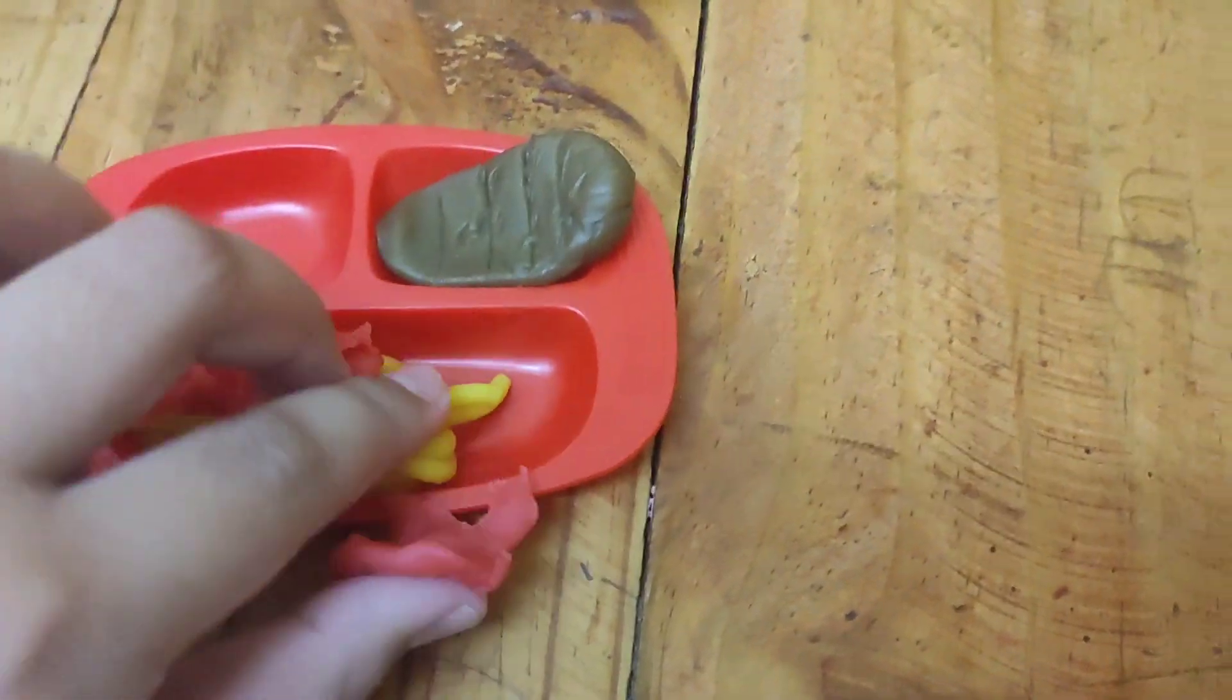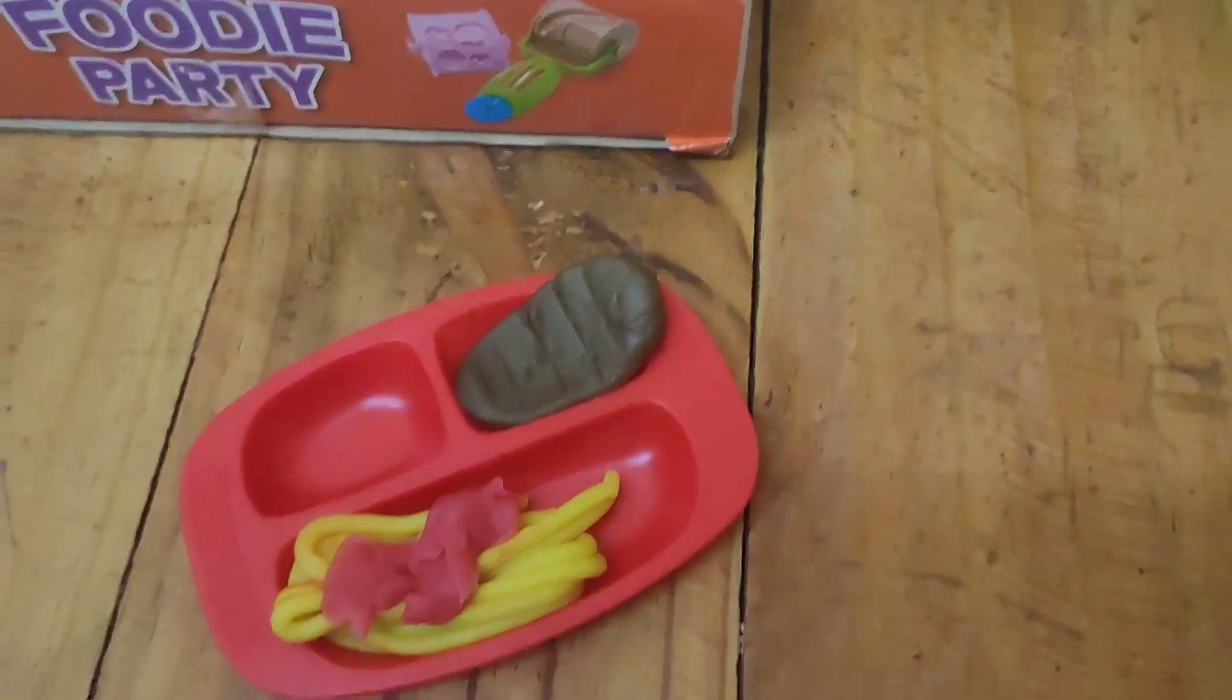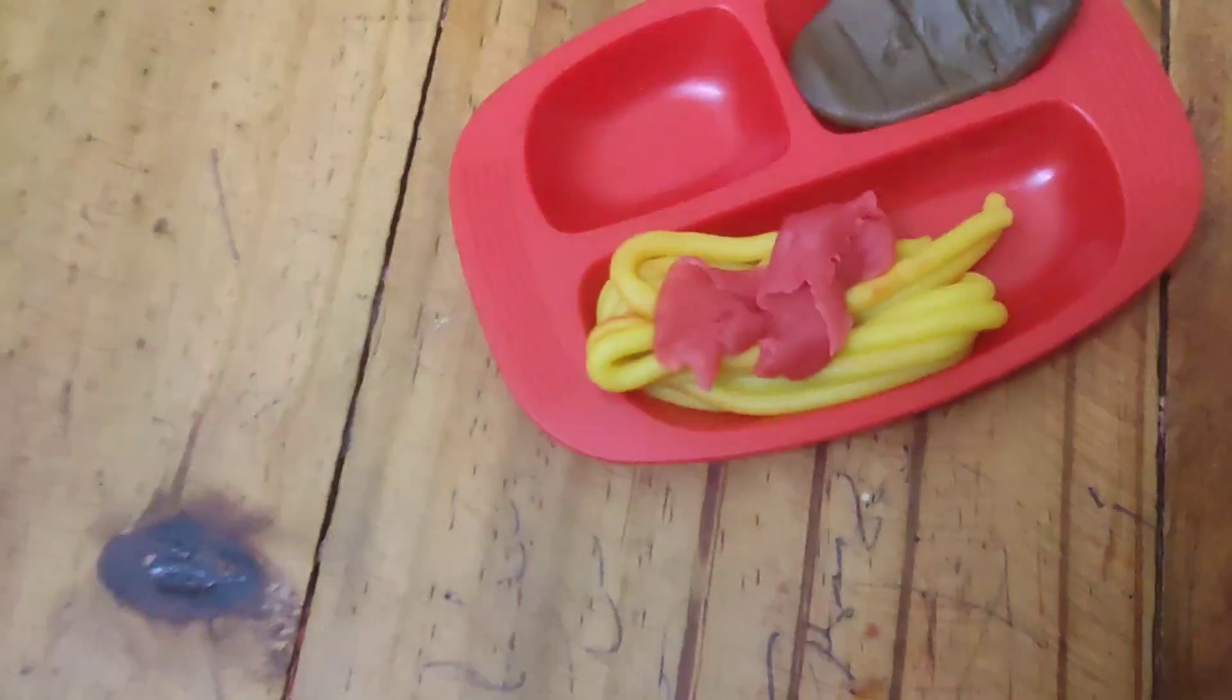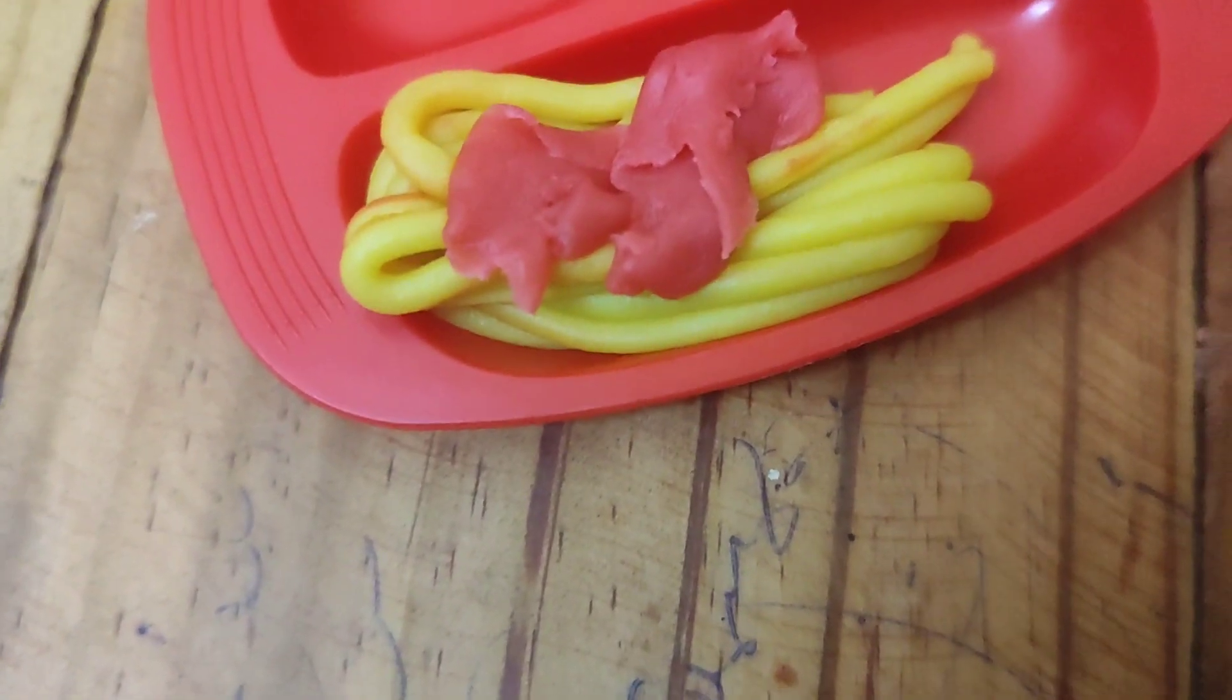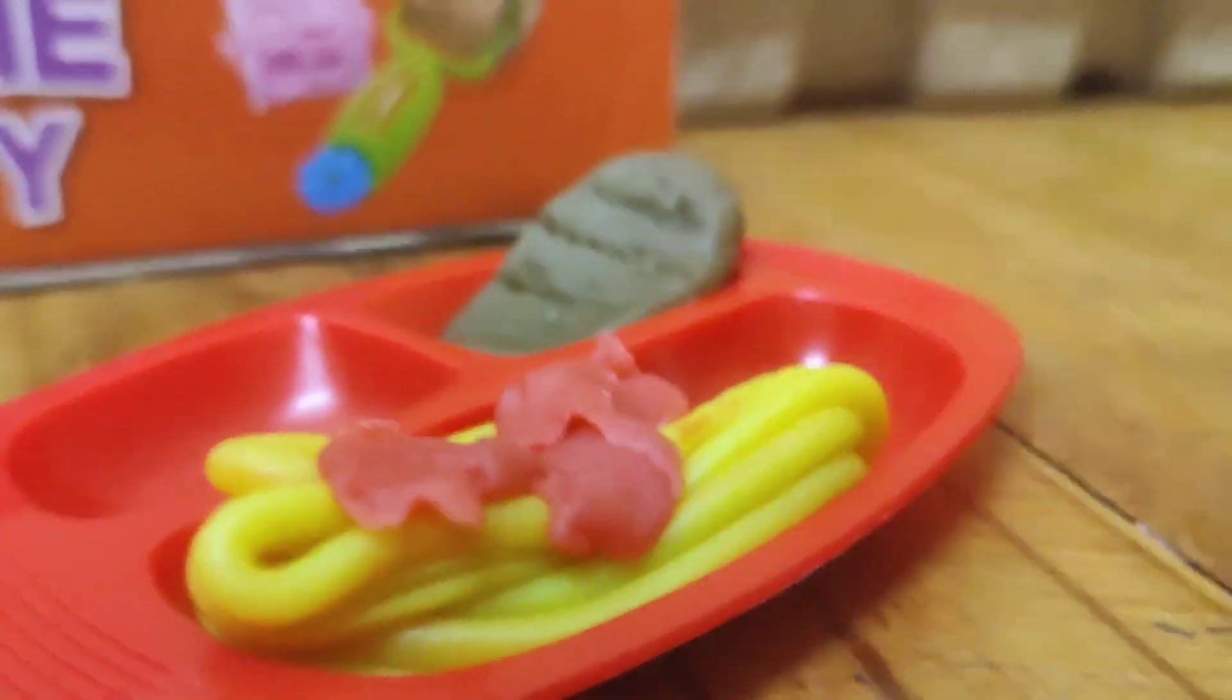Here we go. We've got, oh my god, why is it not sticking on? Wait, let's just use a little bit of red for ketchup because it's not sticking on the spaghetti. So it's going to be hard to take that off later.